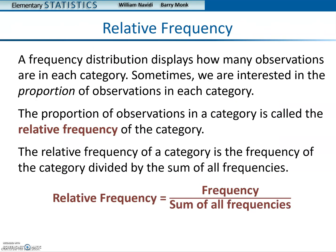A frequency distribution displays how many observations are in each category. Sometimes we are interested in the proportion of observations in each category. The proportion of observations in a category is called the relative frequency of the category. The relative frequency of a category is the frequency of the category divided by the sum of all frequencies.